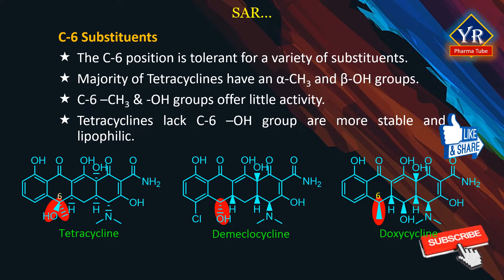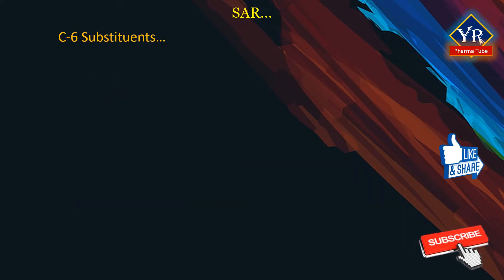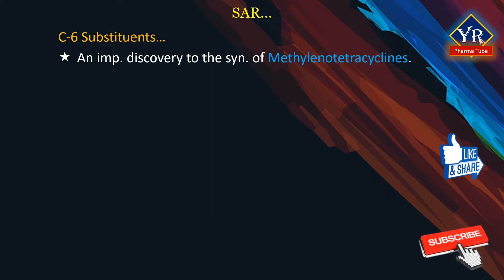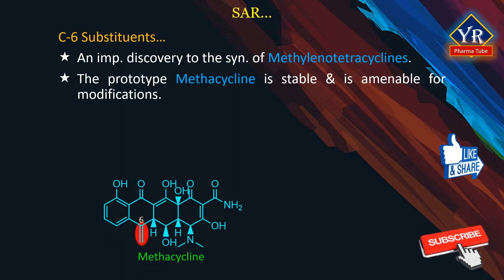Nevertheless, both demeclocycline and doxycycline are marketed agents. Interestingly, the dactylocyclines have both C6 methyl and C6 hydroxyl substituents present but in reversed stereochemistry compared to the tetracycline series. An important discovery pertaining to C6 substituents was realized with the synthesis and investigation of the corresponding methylene tetracyclines. The prototype is metacycline. The C6 exomethylene substituent is surprisingly stable under physiological conditions and this group is also amenable to chemical modifications. Addition reactions across the double bond have produced some interesting derivatives; for example, mercaptan addition has afforded some active C6 alkylthiomethyl tetracyclines.